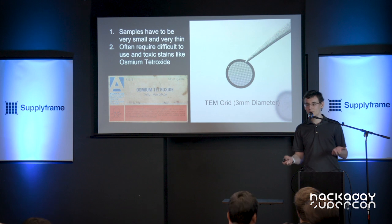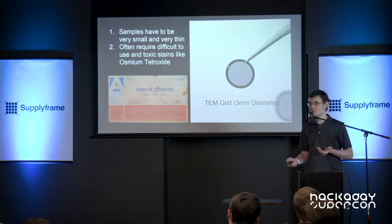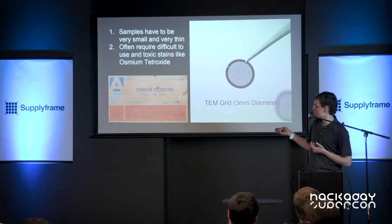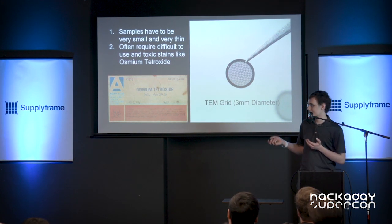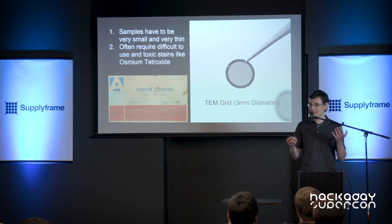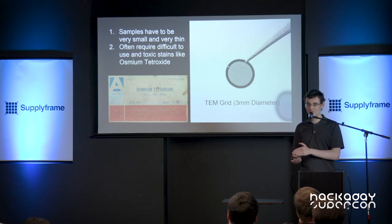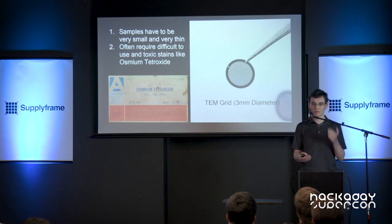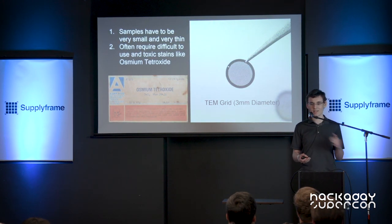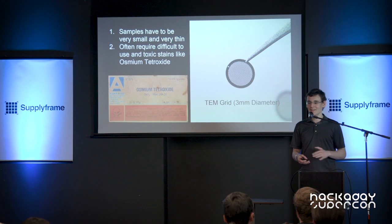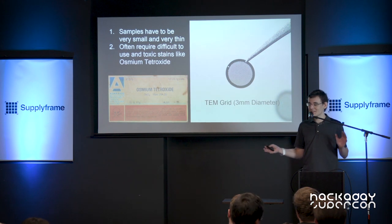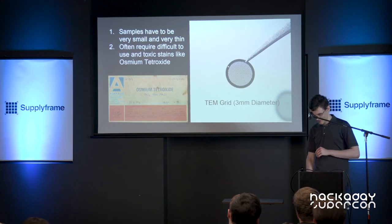You also have to have the sample produce contrast. To do that you use something like osmium tetroxide, which is basically a heavy metal stain designed to stain tissue with heavy metals. If you get it on you, it will give you heavy metal poisoning instantly. Not desirable for our community.